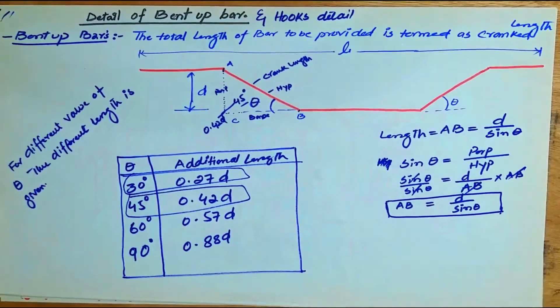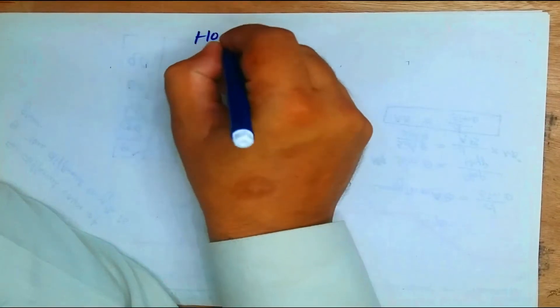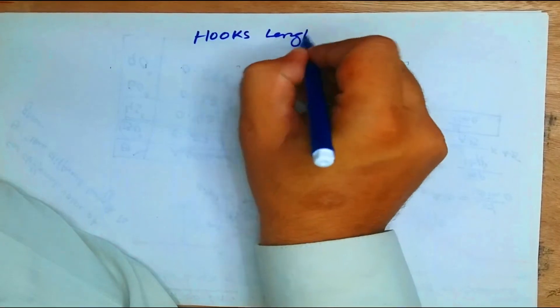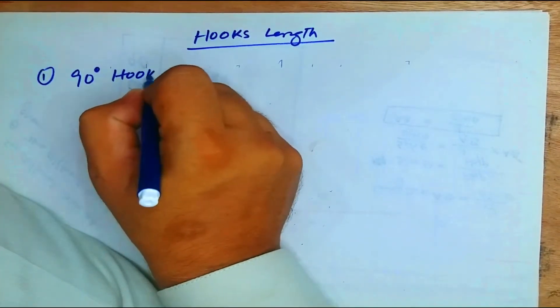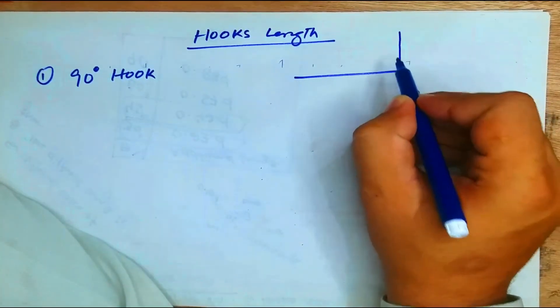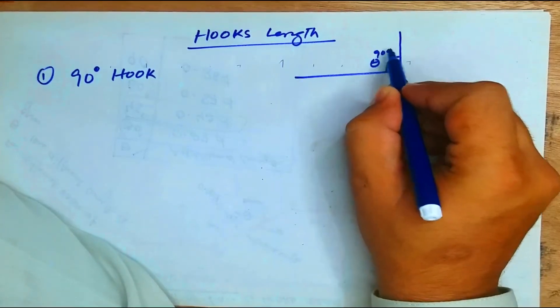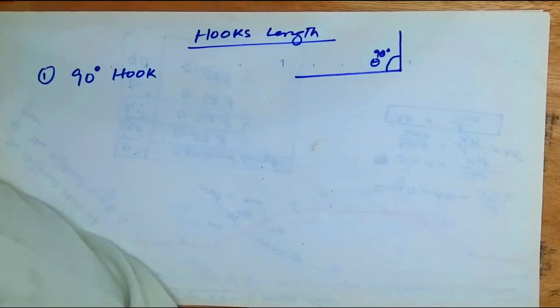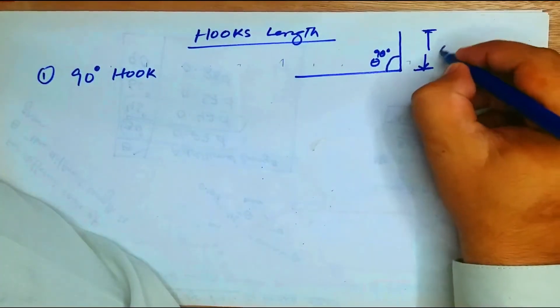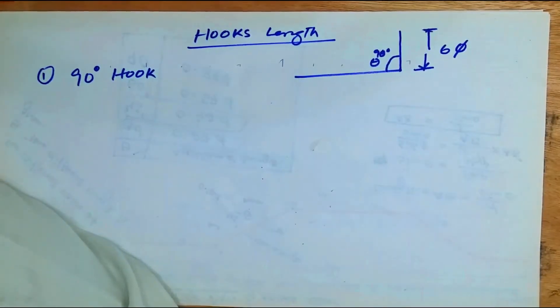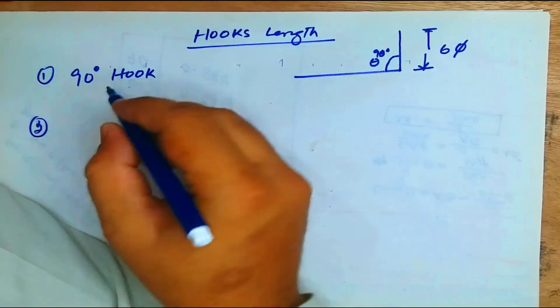Now we will discuss the different types of hooks — what a hook is and how to find hook length. The first type is the 90-degree hook, where the bar is bent at 90 degrees. For this type of hook, the extra length to be added is 6 times the diameter of the bar (6d).